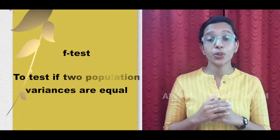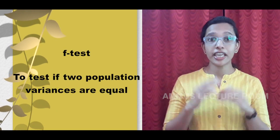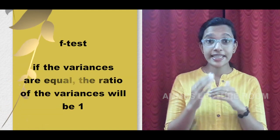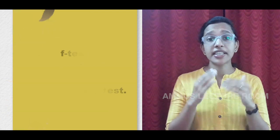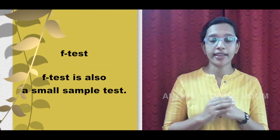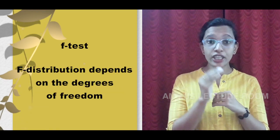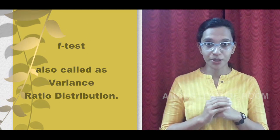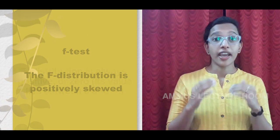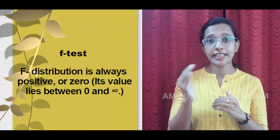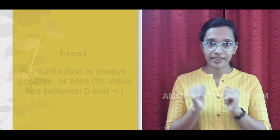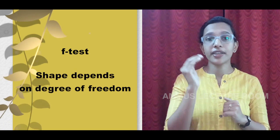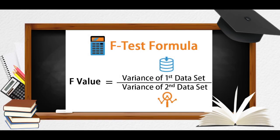This is the f-test. The f-test means that the two-population variances are equal — that is, variance ratio is 1. F-test uses sample size that is small, maximum 30. F-distribution is defined by degrees of freedom. F-distribution is a variance ratio distribution and is positively skewed. The value range starts from 0, and F-distribution shape depends on the degrees of freedom. The formula for the F-test: F value is equal to variance of first data set divided by variance of second data set.